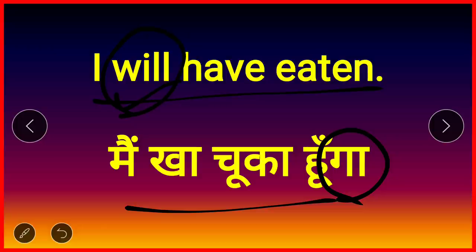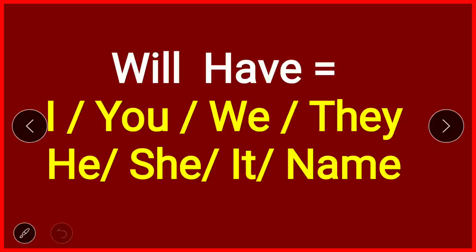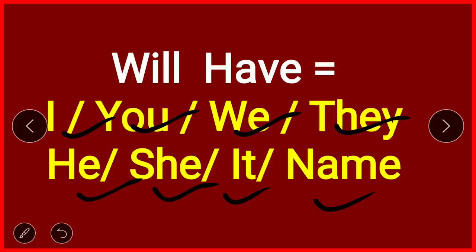We will learn 'shall' when we go deep into grammar, but for spoken English — for speaking English — using 'shall' is not necessary at all. So just set 'will.' 'You will have eaten' — aap kha chuke honge / tum kha chuke honge. With 'will have,' you can use it with I, you, we, they, he, she, it, and all names — because 'will have' becomes one unit.